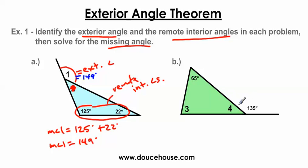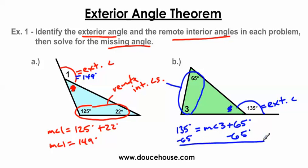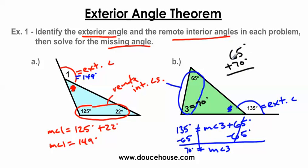Let's do the same thing on problem B. The exterior angle is outside the triangle. If I eliminate the adjacent interior angle, I'm left with the remote interior angles: 65 degrees and angle 3. My goal is to find the measure of angle 3. The exterior angle equals the sum of the two remote interior angles, so I subtract 65 degrees from both sides and get 70 degrees equals the measure of angle 3. I can verify: 65 plus 70 equals 135 degrees, which is exactly the exterior angle.